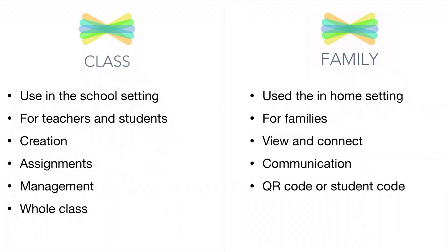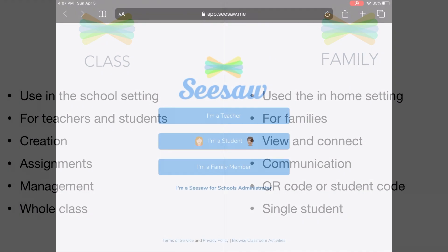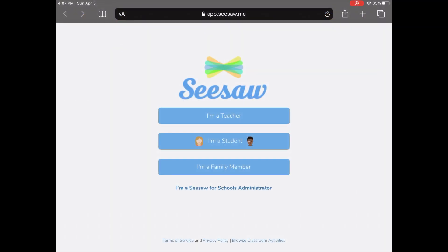In order to join, families have a QR code or student code. This is between a single student and family. The families will not be seeing the entire class work, but only their child or student. Remember, you can visit app.seesaw.me to sign up for a free Seesaw account.